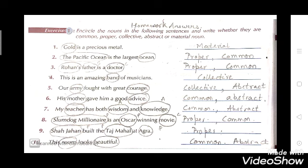Third: 'Rohan's father is a doctor.' Rohan is a proper noun, father is a common noun, doctor is a common noun. Fourth: 'This is an amazing band of magicians.' Here band — a group of musicians — so band is a collective noun. Fifth: 'Our army fought with great courage.' Army is a collective noun, courage is an abstract noun.